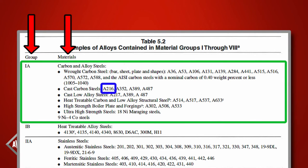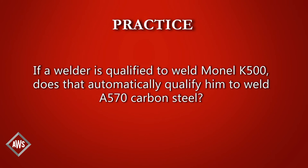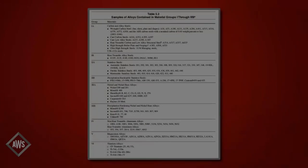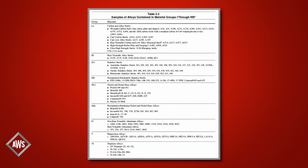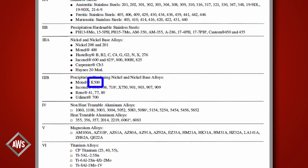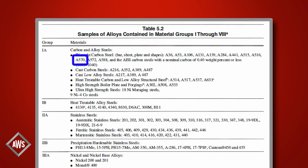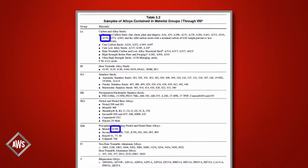He would not, however, be qualified to weld metals from the other groups. If a welder is qualified to weld Monel K500, does that automatically qualify him to weld A570 carbon steel? The answer is no. Monel K500 belongs to base metal group 3B, while A570 belongs to group 1A. According to 5.3.2.1, being qualified in base metal group 3B would only qualify welders in that group and group 3A.